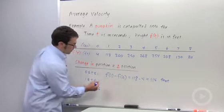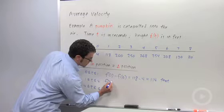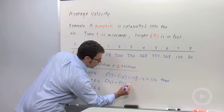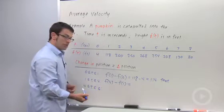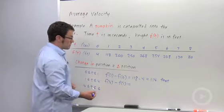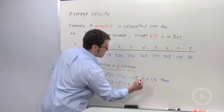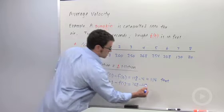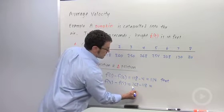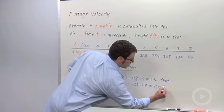Now let's look at the interval from 1 to 4. The change in position is f of 4 minus f of 1. Always remember, it's final position minus initial position when you're calculating the change in position. f of 4 is 268. And again, f of 1 is 118. So you just subtract and you get 150 feet.